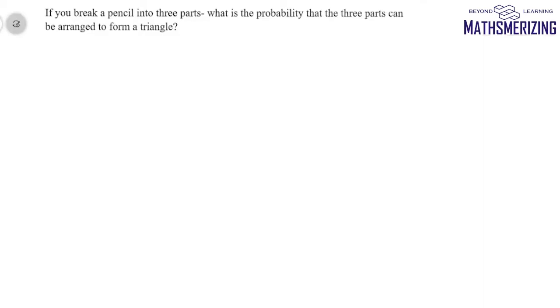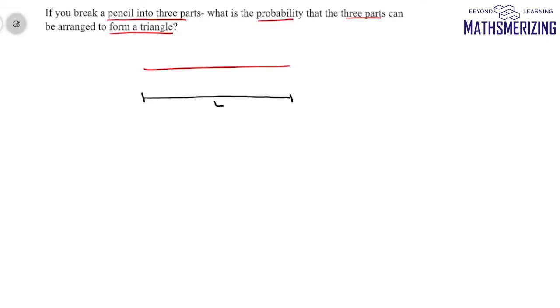Now we'll discuss an interesting problem in geometrical probability. The question is: if you break a pencil into three parts, what is the probability that the three parts can be arranged to form a triangle? Suppose we have a pencil of length l. We break it into three parts: the first part has length x, the second has length y, and the third has length l minus x minus y.